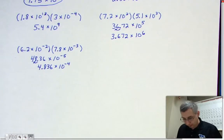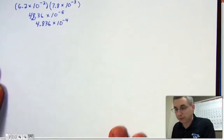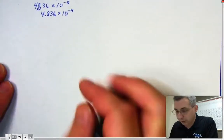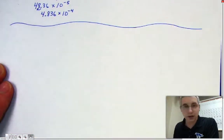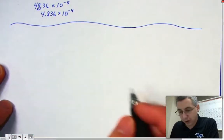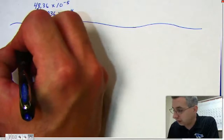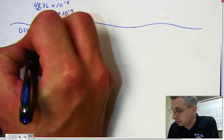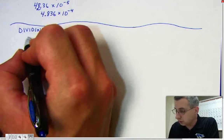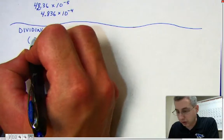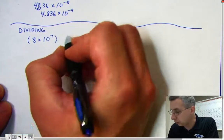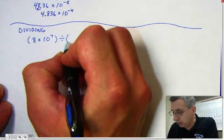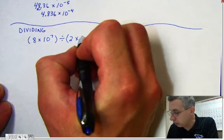The next step is to divide. Let's do an example. Let's do 8 times 10 to the 7th divided by 2 times 10 to the 4th.